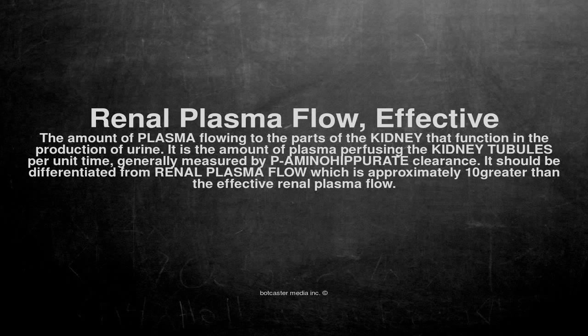Renal Plasma Flow — Effective Renal Plasma Flow is the amount of plasma flowing to the parts of the kidney that function in the production of urine. It is the amount of plasma perfusing the kidney tubules per unit time, generally measured by para-aminohippurate (PAH) clearance.